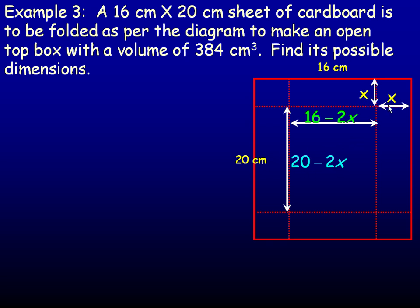And so, since we have algebra expressions for the length, width and height of this box, we could write an expression for, or a formula for, the volume of the box. And remember, volume of a rectangular prism, or a box, is length times width times height, so here's the product of the three dimensions,